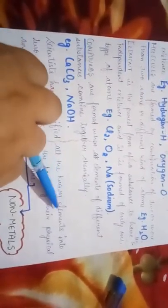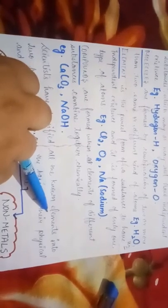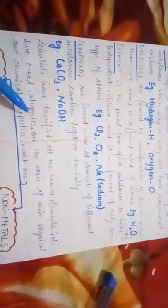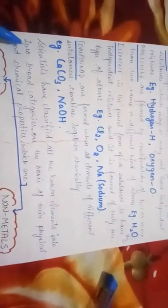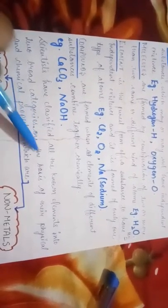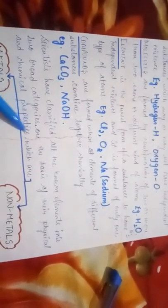Now see here what word they have used: elements. And elements were what? Which have independent existence. So the substance which exists independently in nature is categorized into two broad categories, and this categorization is made on the basis of their physical and chemical properties, which are metals and nonmetals.